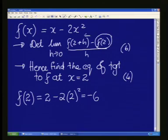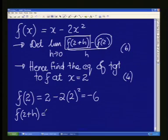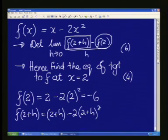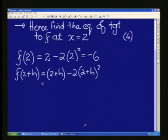Now I do the same for the second part. f of 2 plus h. What is f of 2 plus h? All your x's in here becomes 2 plus h's. So I get my 2 plus h minus twice the 2 plus h all squared. A little bit more work that I have to do over here.